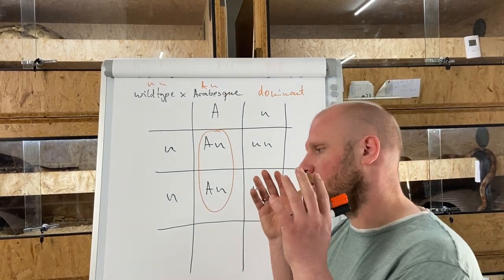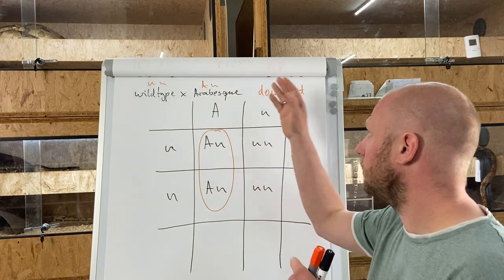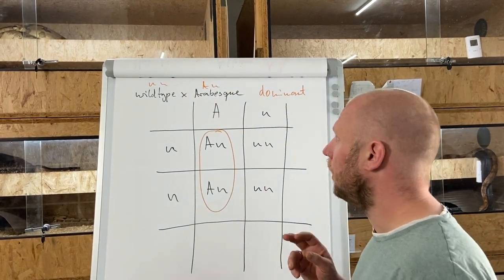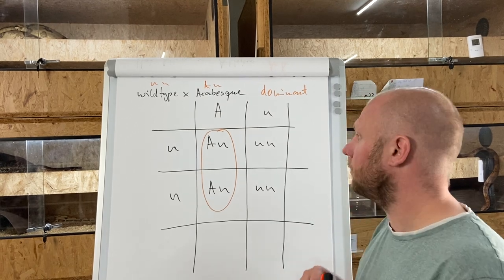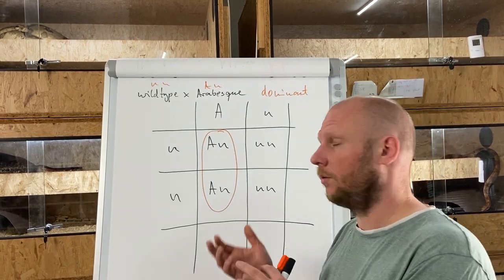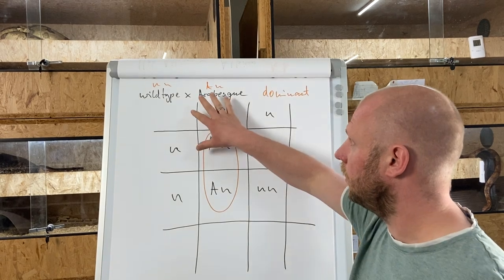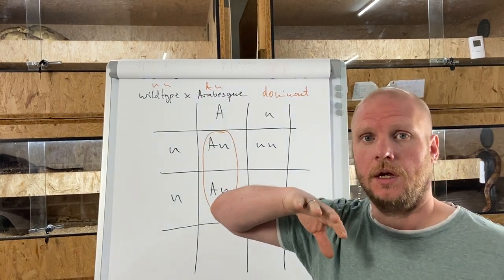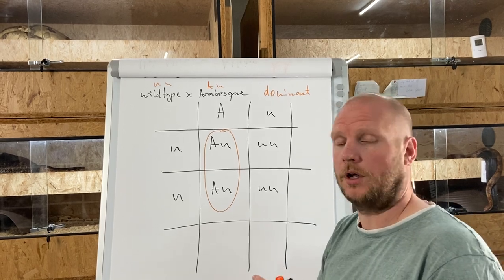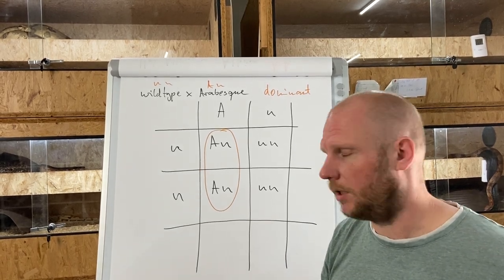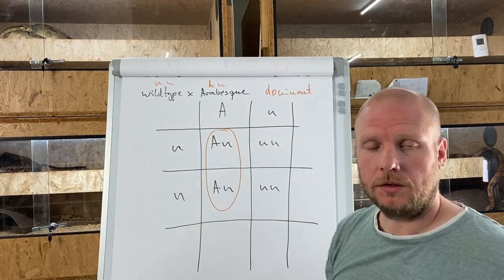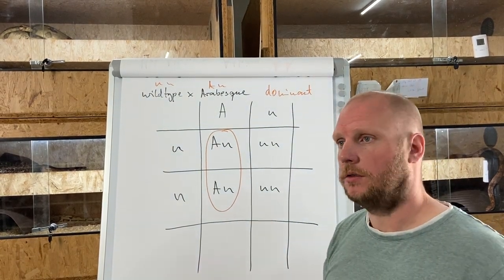You can replace arabesque with any other dominant trait, like IMG or at-stake — it all works the same. The only thing you need to ask is whether the trait is recessive or dominant. We'll also make a video about incomplete dominant traits, but today all you need to know is the recessive vs. dominant distinction.